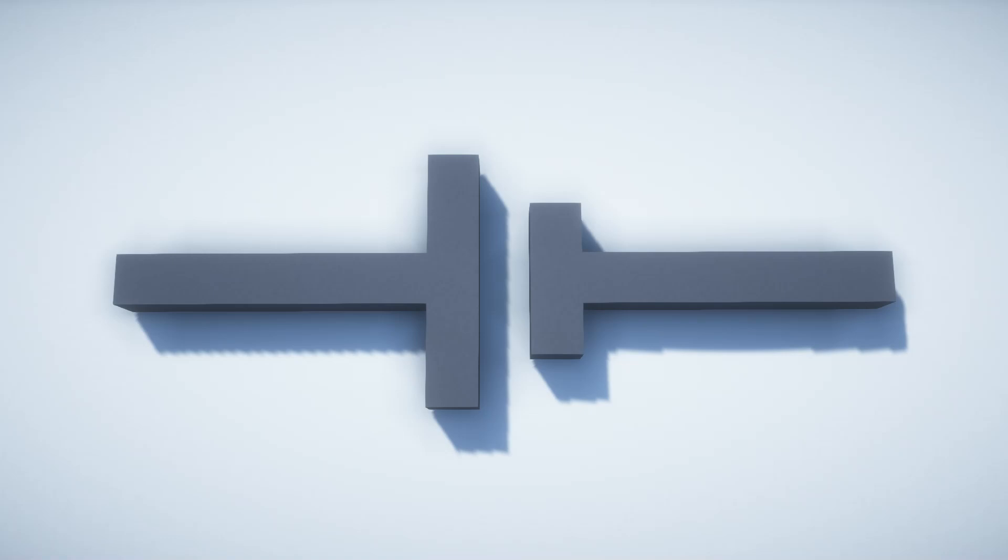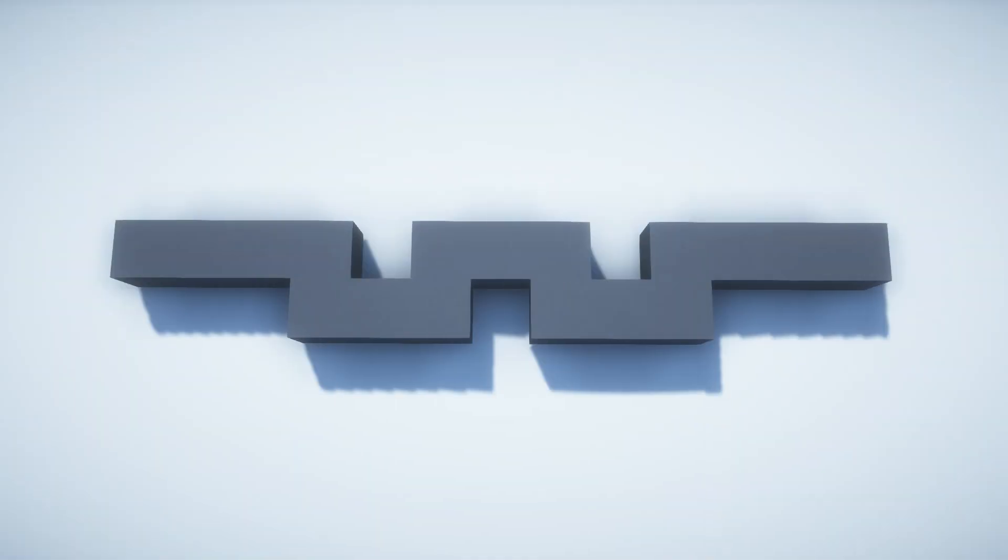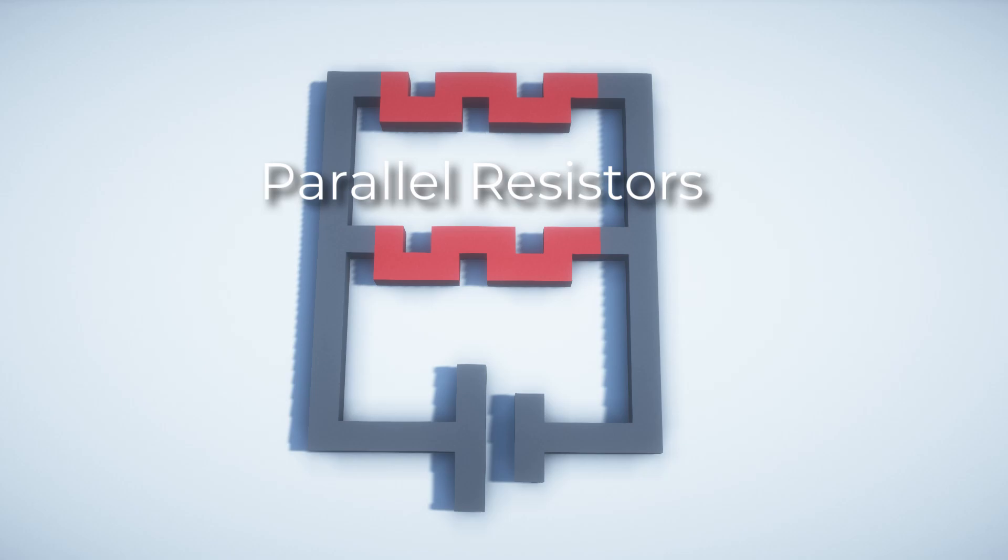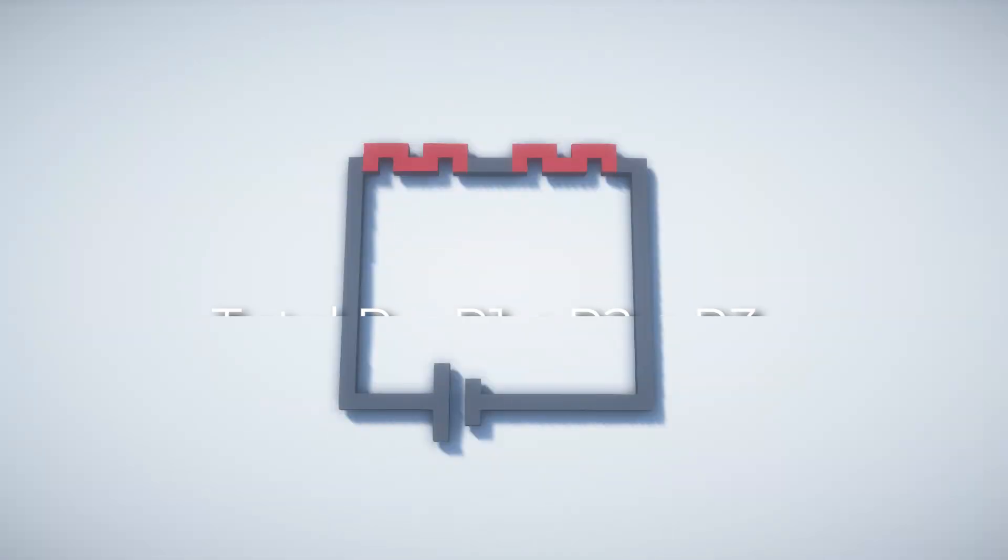Now before we move on, I'll be using battery as this symbol, a resistor as this symbol and anything in between as wires. Now to calculate resistance, there are two formulas. One if the resistors are in series, like this, or if they are in parallel, like this. For the series one, it's actually quite easy to find the resistance. Just add up all the resistances of the resistors and that is the total or equivalent resistance.